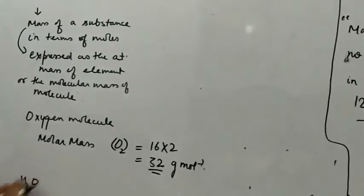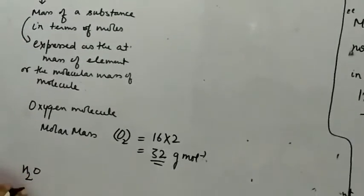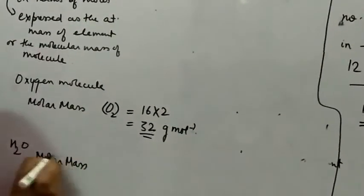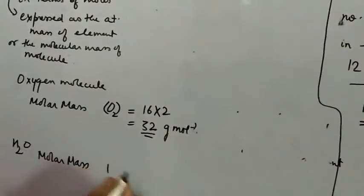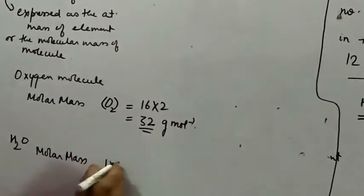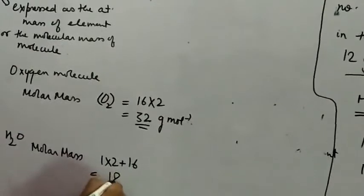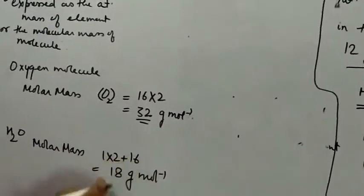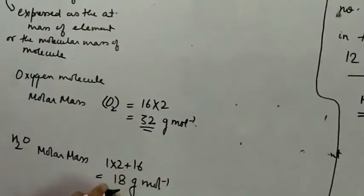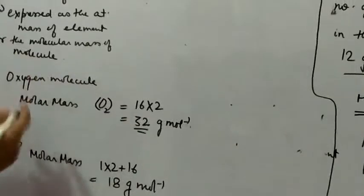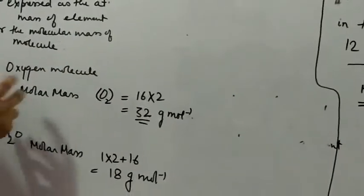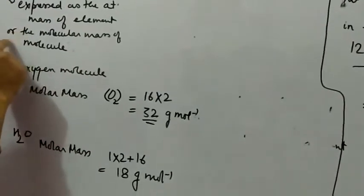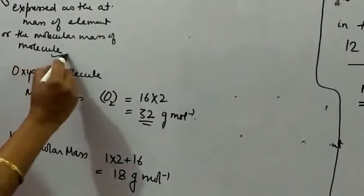Similarly, for water H₂O, the molar mass will be 1 × 2 + 16 = 18 grams per mole. So the mass of one mole of water will be 18 grams. To summarize, molar mass is the mass of a substance in terms of moles, and it is expressed as the atomic mass of the element or the molecular mass of the molecule.